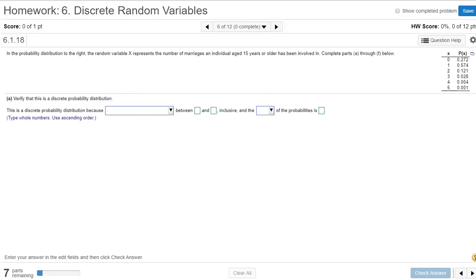In the probability distribution to the right, the random variable x represents the number of marriages an individual age 15 years or older has been involved in. Complete parts A through F below.